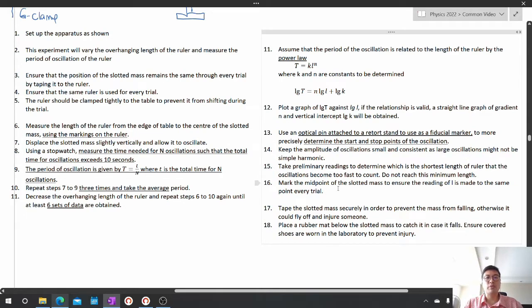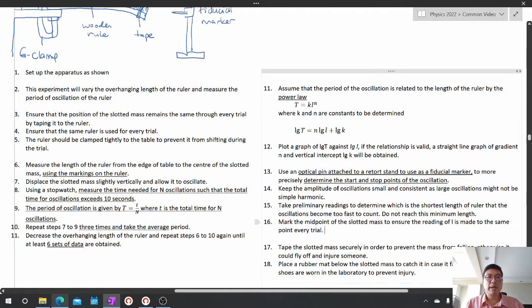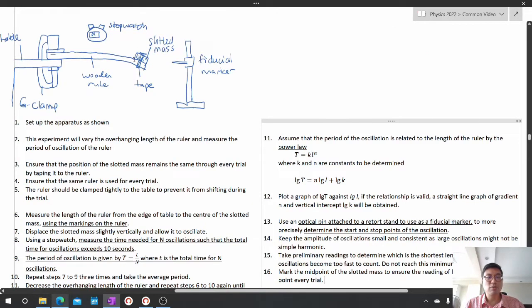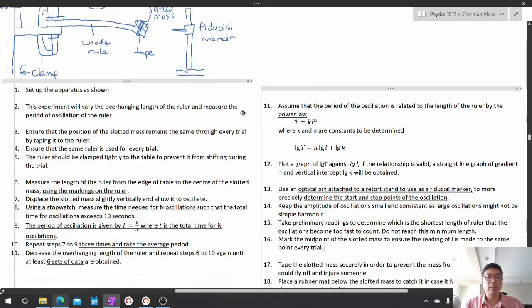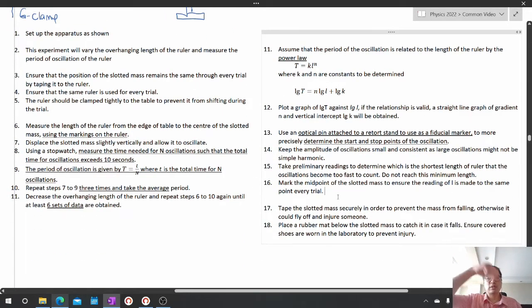Another thing that we can improve on is that the slotted mass is pretty large. So where are we going to measure it from? We'll mark the midpoint of the slotted mass using a marker so that we can ensure the reading of the length is made to the same point for every trial.